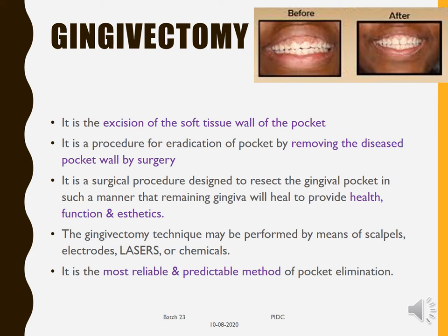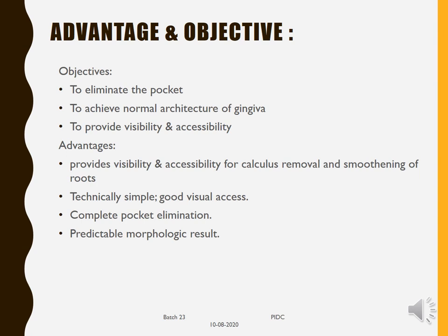The next procedure is gingivectomy. As the name suggests, it is the excision of the soft tissue wall of the pocket — a procedure for eradication of the pocket by removing the diseased pocket wall surgically. It is designed to resect the gingival pocket so that the remaining gingiva provides health, function, and aesthetics. It can be performed by scalpels, electrodes, lasers, or chemicals. It is considered the most reliable and predictable method of pocket elimination, as the tissue is completely removed. The main objectives are to eliminate the pocket, achieve normal gingival architecture, and provide visibility and accessibility.